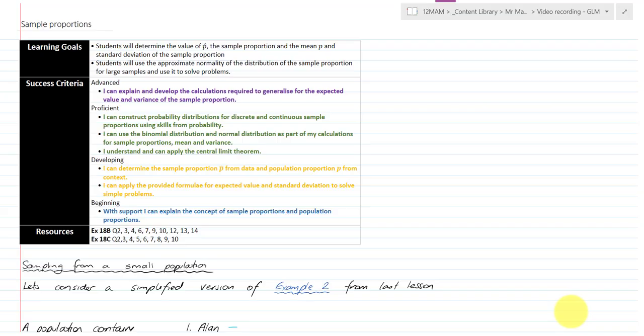Hi and welcome to Video 3 of Unit 4 Topic 5 Samples and Confidence Intervals from the Math Methods Curriculum. We're looking at sample proportions today and covering a couple of exercises in the textbook, talking about how we build and use sample proportions particularly where we're taking multiple samples and also where we're looking at a small or a large population. We're going to start with a small population.